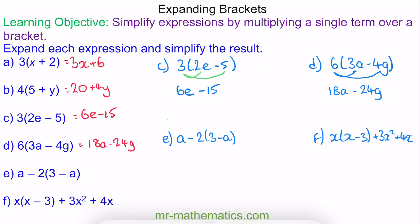Moving on to question E, we have our a term here. And now we're multiplying it out by a negative 2. So negative 2 times 3 is negative 6. And negative 2 times negative a is positive 2a.